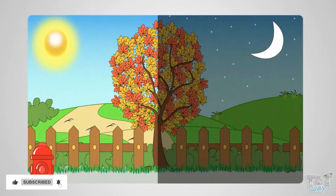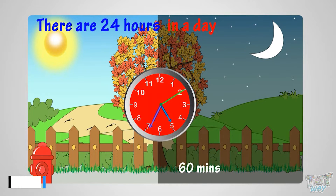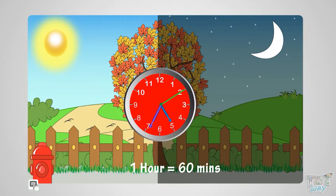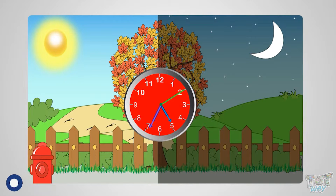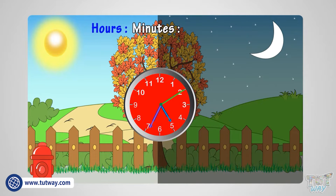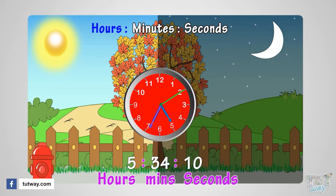First of all, there are 24 hours in a day, 60 minutes in each hour, and 60 seconds in each minute. We write time as hours, minutes, seconds. For example, the time shown here is 5 hours, 34 minutes, and 10 seconds.